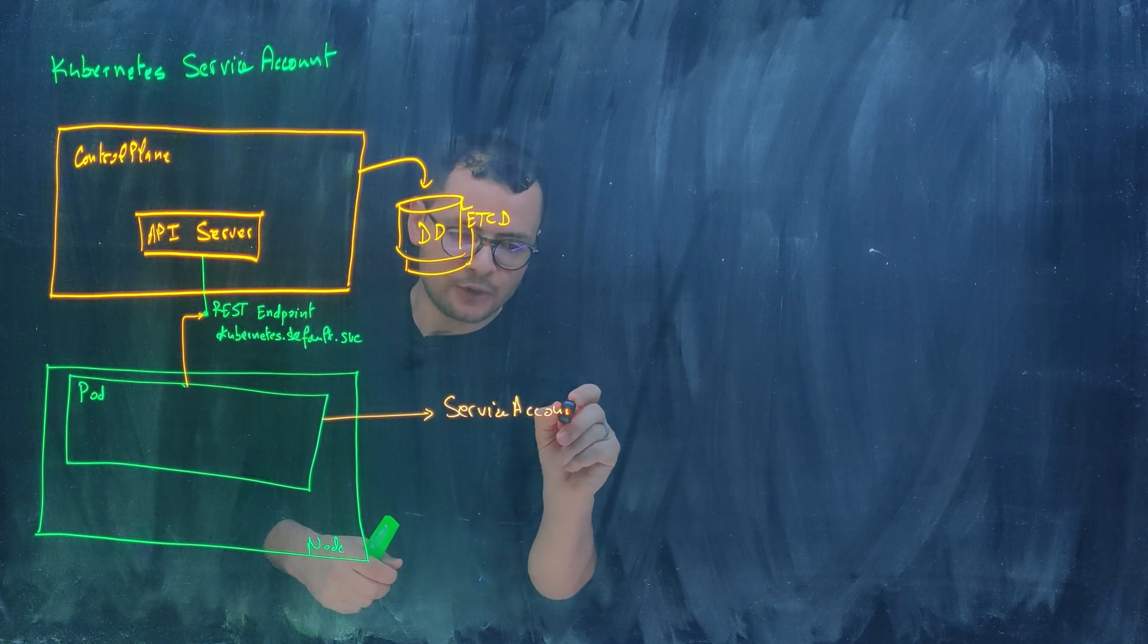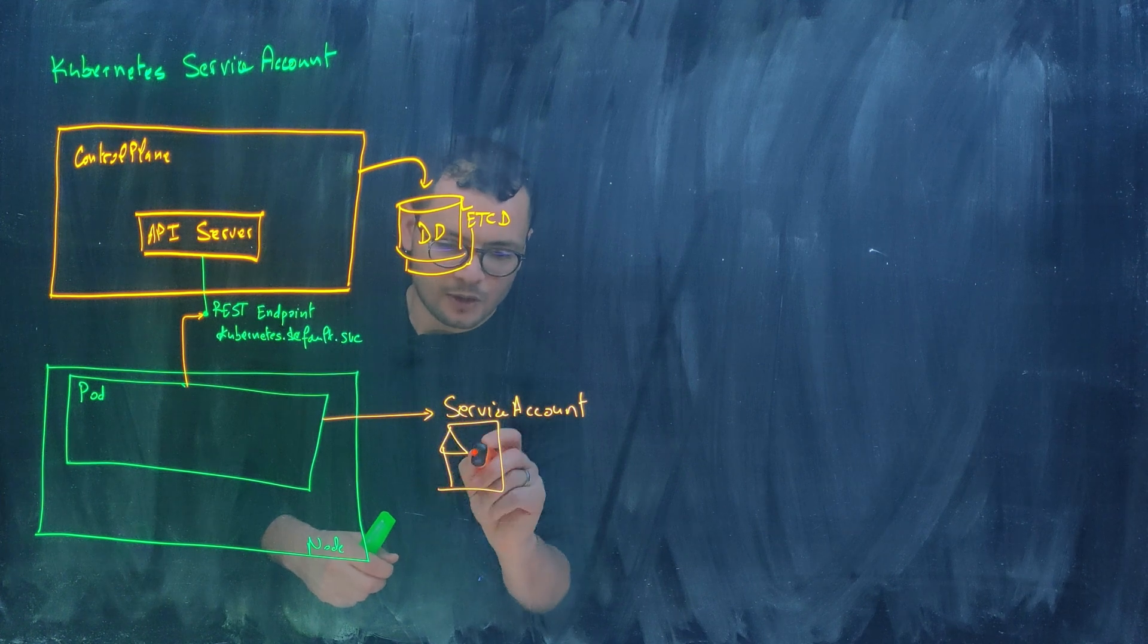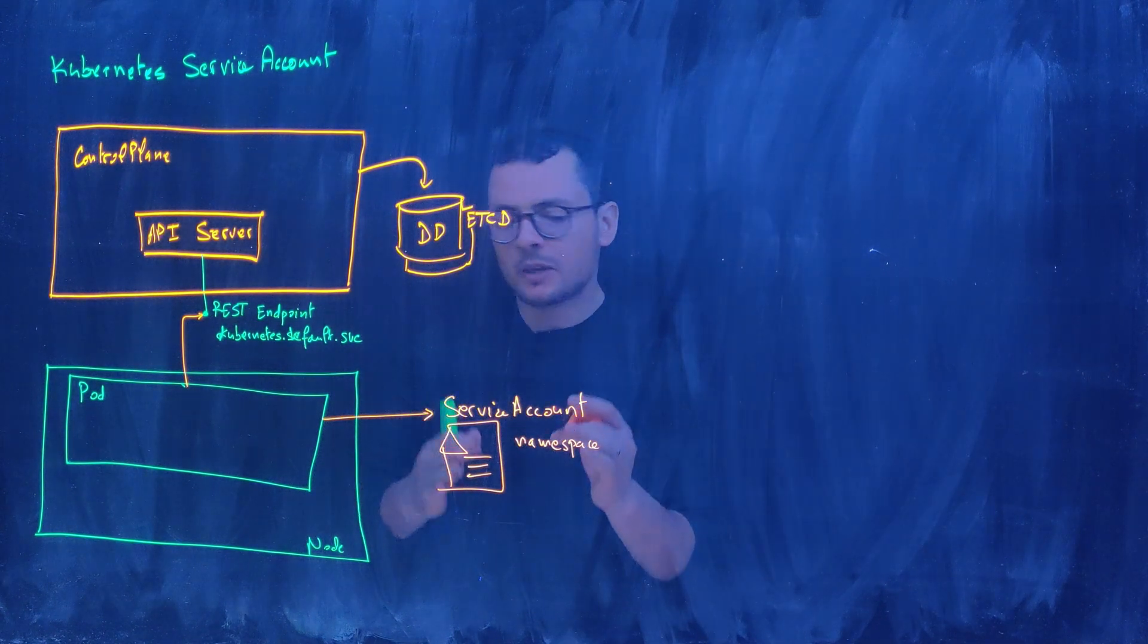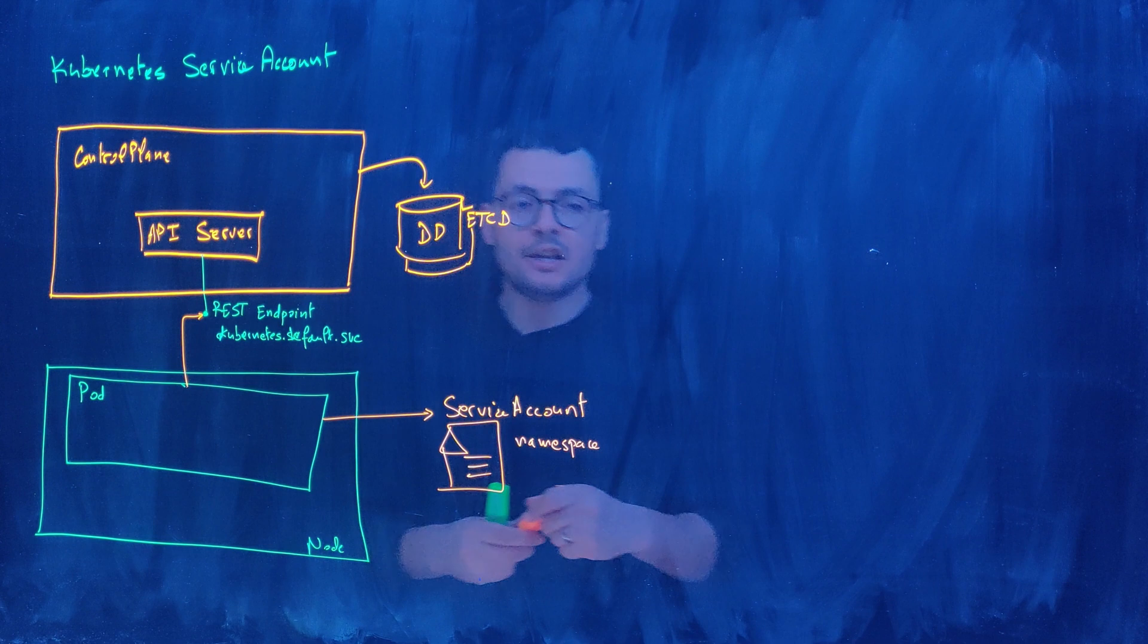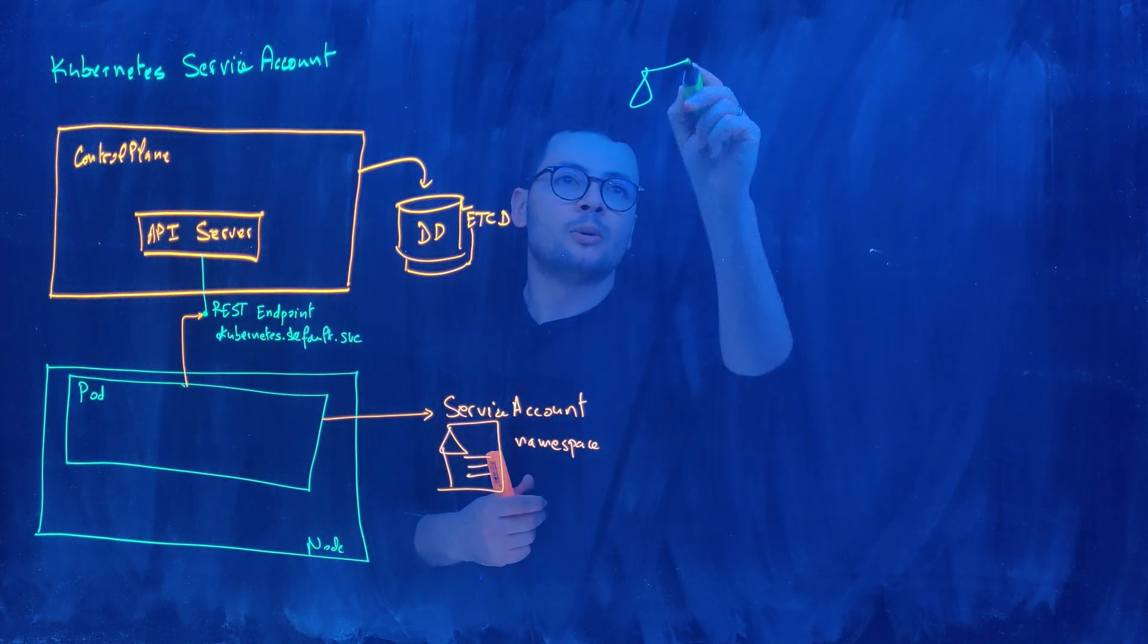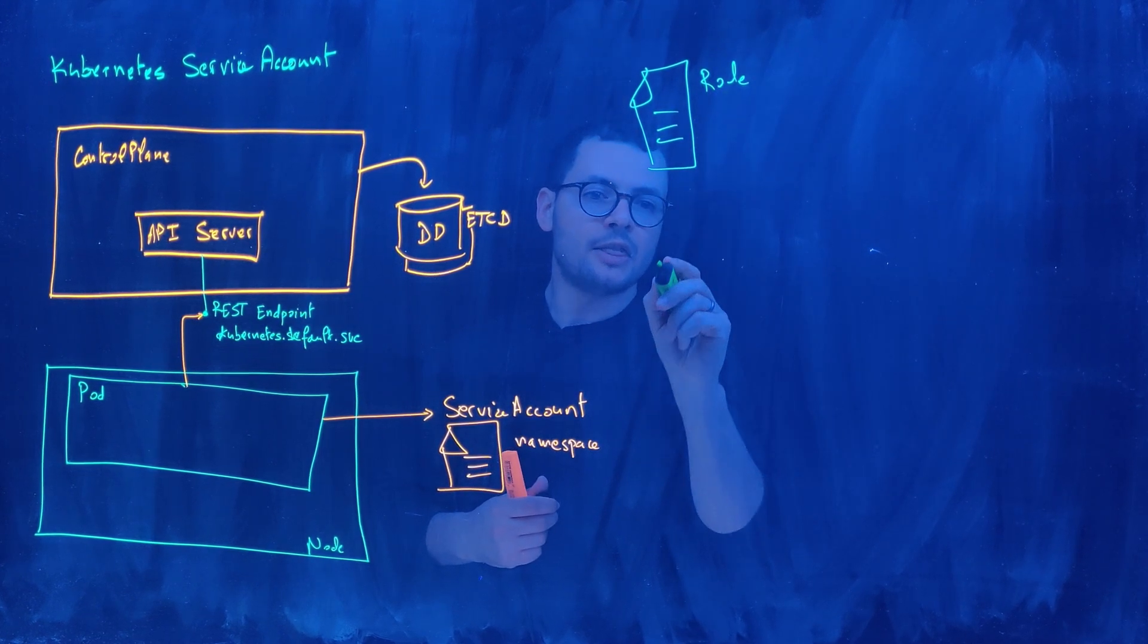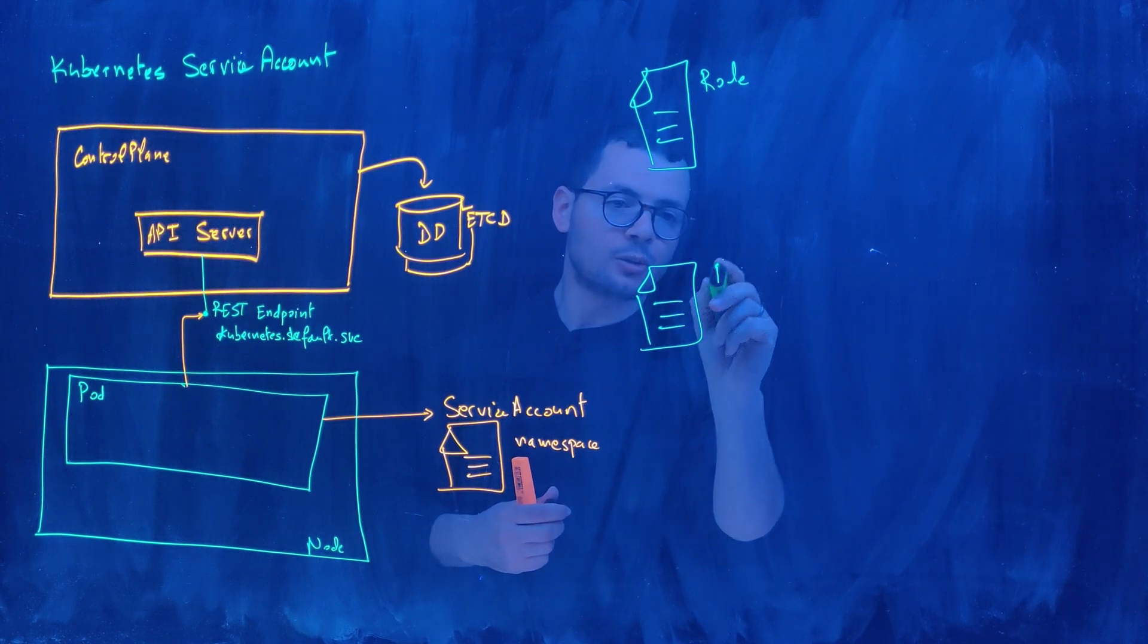So a service account is just a Kubernetes object that would have a name and a namespace. Now the service account itself by default doesn't have any role defined there. So we need to create the roles ourselves. We need to create first a Kubernetes role. That's another Kubernetes object. And then second, we need to create a Kubernetes role binding.